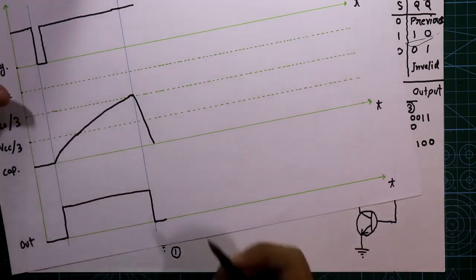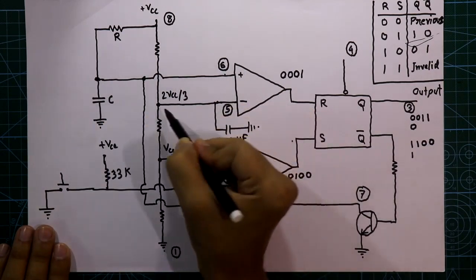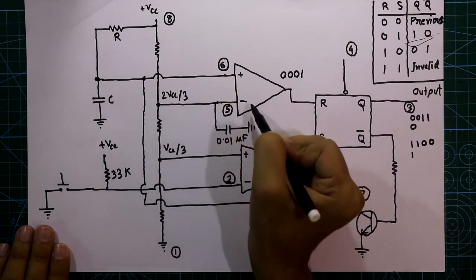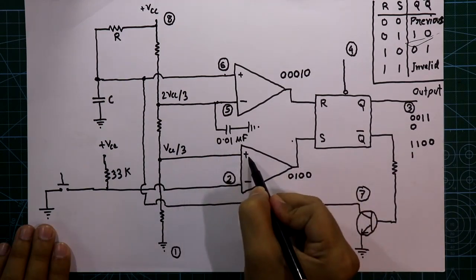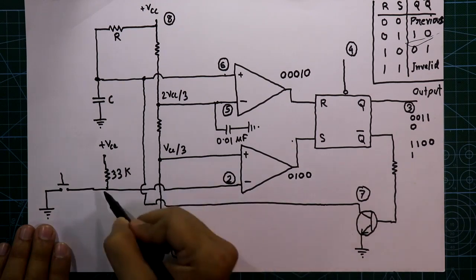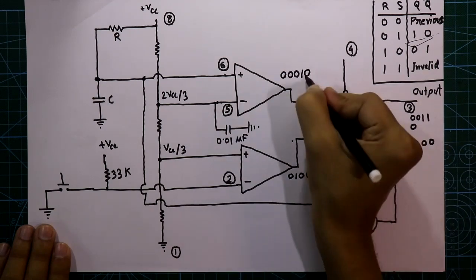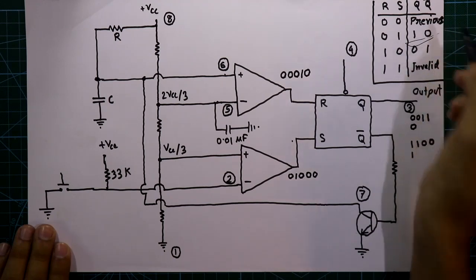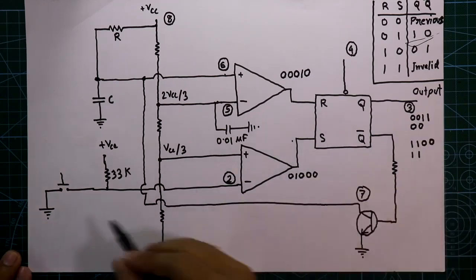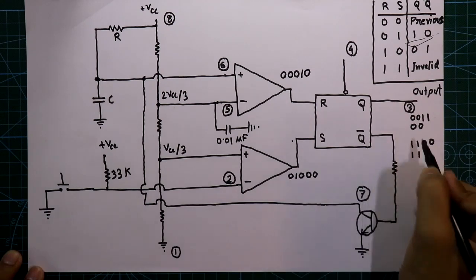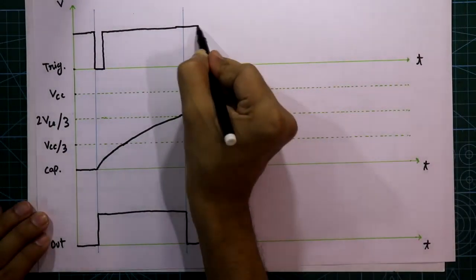With zero volts across the capacitor, the upper comparator has zero at its non-inverting input and 2Vcc/3 at its inverting input — output zero. The lower comparator has Vcc/3 at its non-inverting input and Vcc at its inverting input — output zero. With R=0, S=0, the flip-flop holds its previous state, which is Q=0 and Q-bar=1. This is the stable state: until another trigger signal is applied, the output will not change.